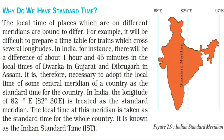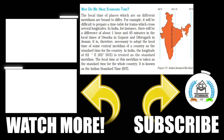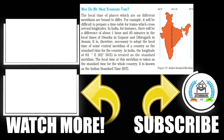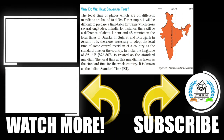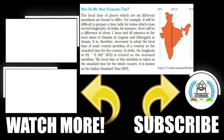So my dear students, in this chapter we have learned about the globe, its shape, latitudes and longitudes including the Tropic of Cancer, and also about Indian Standard Time. Here is figure 2.9 showing the Indian Standard Meridian. You can draw this figure in your notebook. I hope you all understood this chapter very well. Thank you.